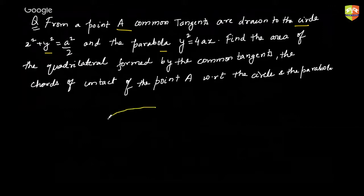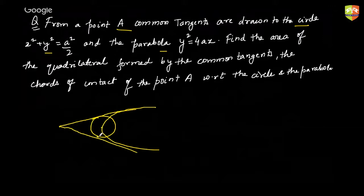Read the question very carefully. This is the circle, and there is a point A through which you are drawing common tangents to both curves. The points of contact form a quadrilateral PQRS, and you need to find its area.